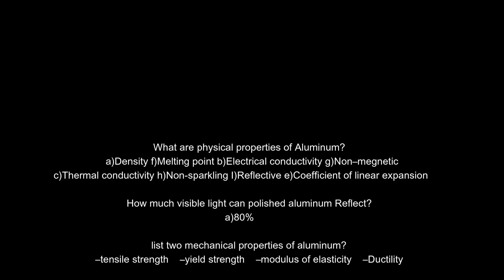What are the physical properties of aluminum? Density, melting point, electrical conductivity, non-magnetic, thermal conductivity, non-sparkling, reflective, and coefficient of linear expansion.